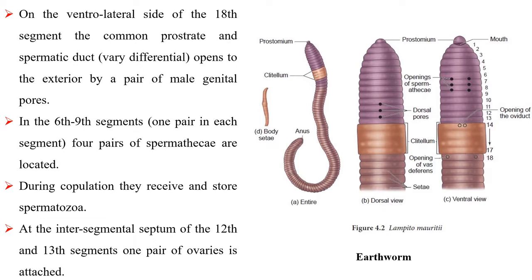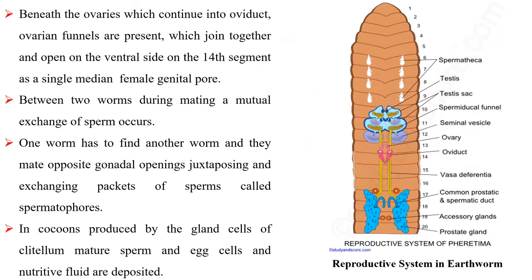In the 6th to 9th segments, four pairs of spermathecae are located. During copulation, they receive and store spermatozoa. At the intersegmental septum of the 12th and 13th segments, one pair of ovaries is attached. Beneath the ovaries, ovarian funnels are present which continue into oviduct, joining together and opening on the ventral side on the 14th segment as a single median female genital pore.